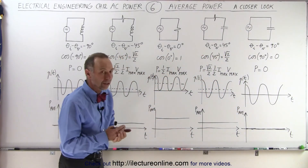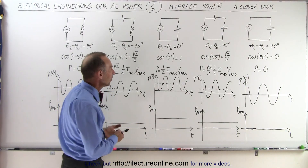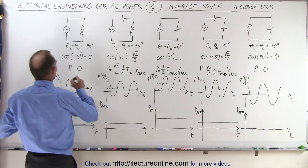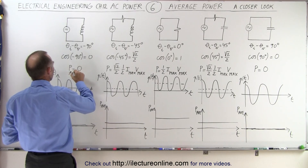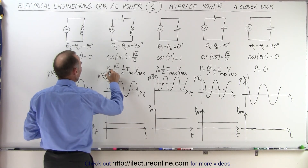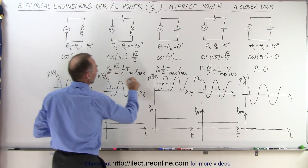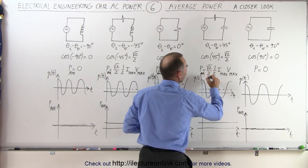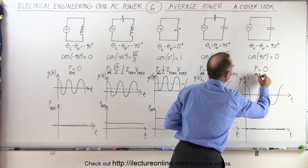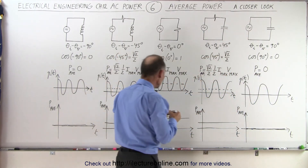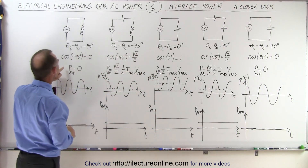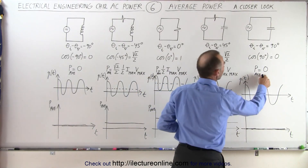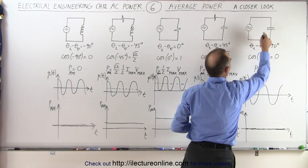How does this affect the average power and the instantaneous power? These are the average power calculations for each case. Notice that there is no average power — average power is zero in a purely inductive circuit, and average power is zero in a purely capacitive circuit.